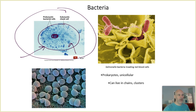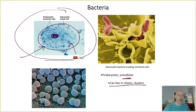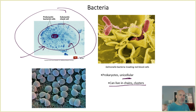Bacteria are generally much smaller. Prokaryotes are unicellular; however, they can live in chains and clusters. As those cells are dividing, they stay attached to each other either in chains or clusters. Sometimes they stay together in pairs or quads, and we'll be learning some of the terminology for that. But each individual cell is one individual bacterial organism.